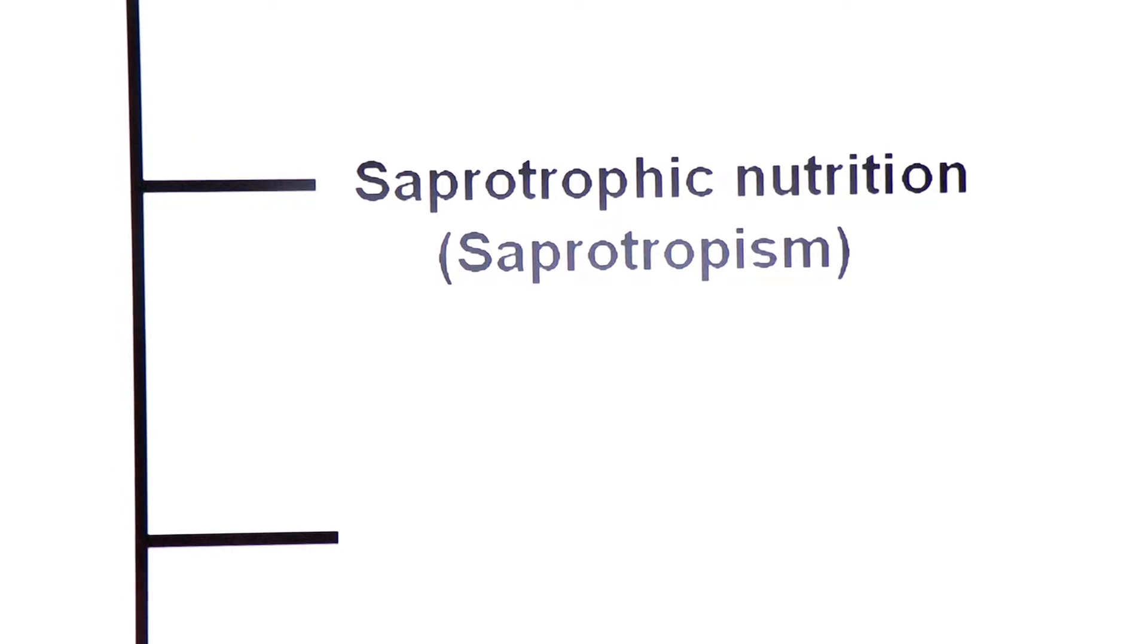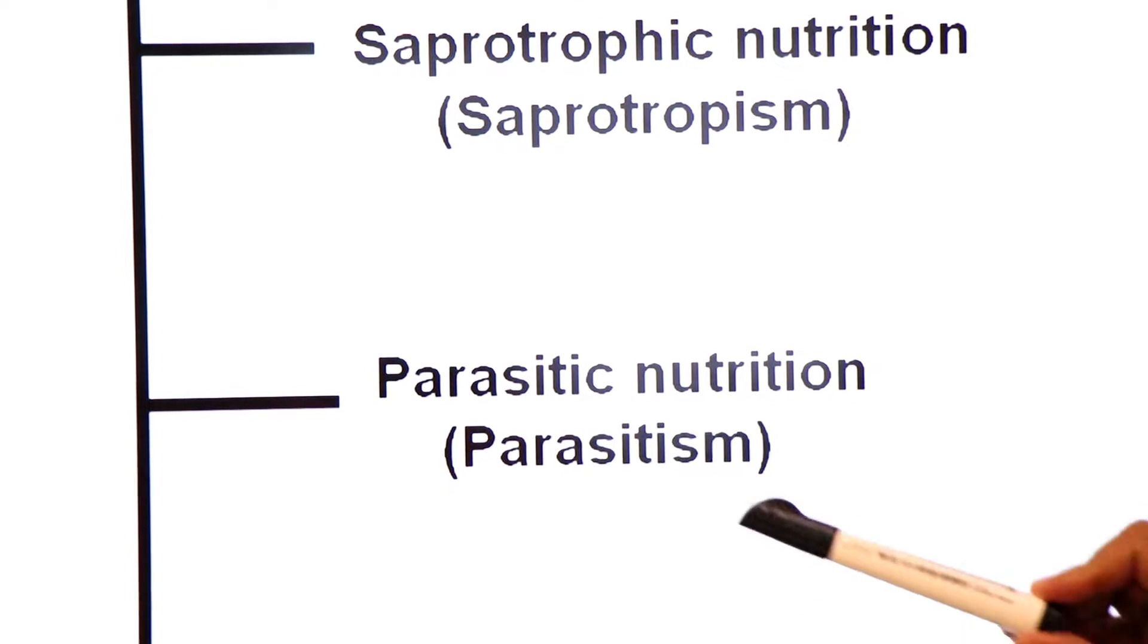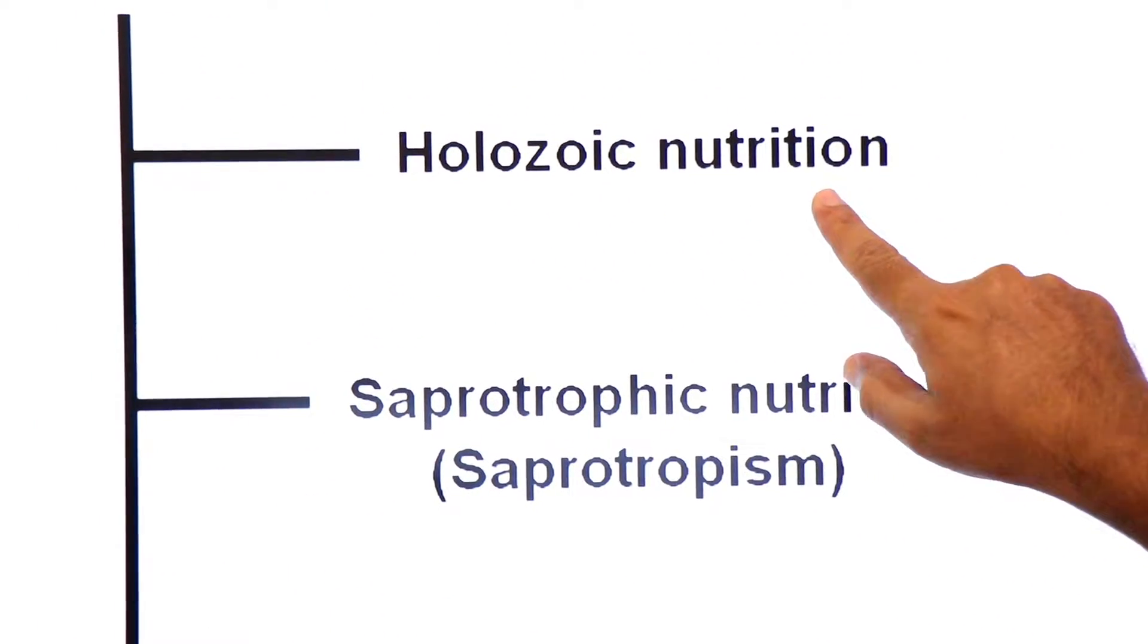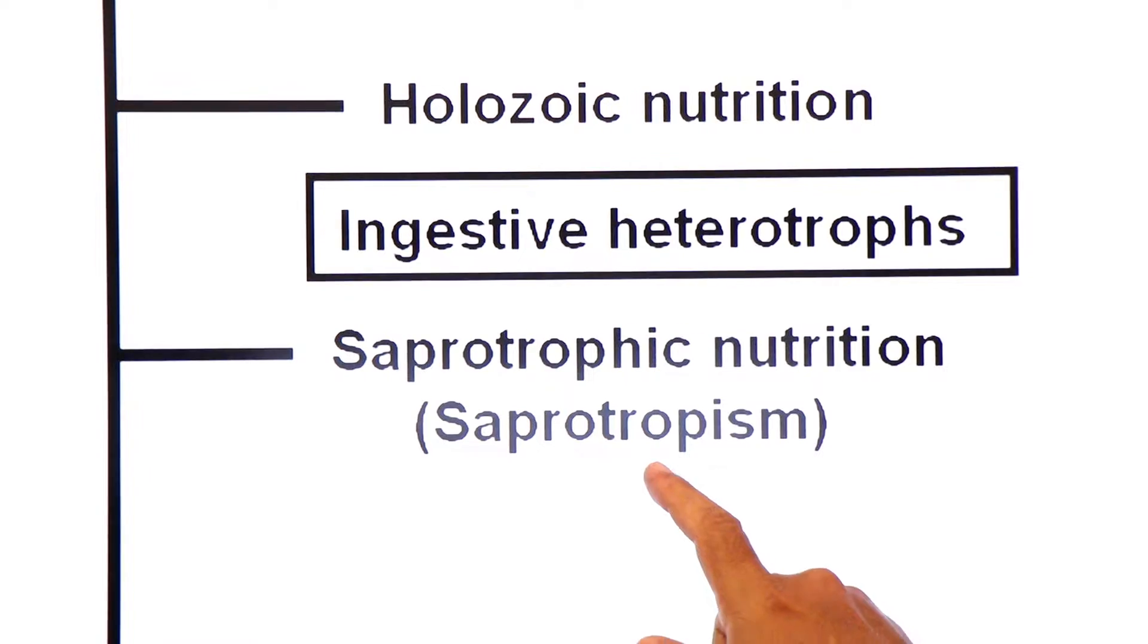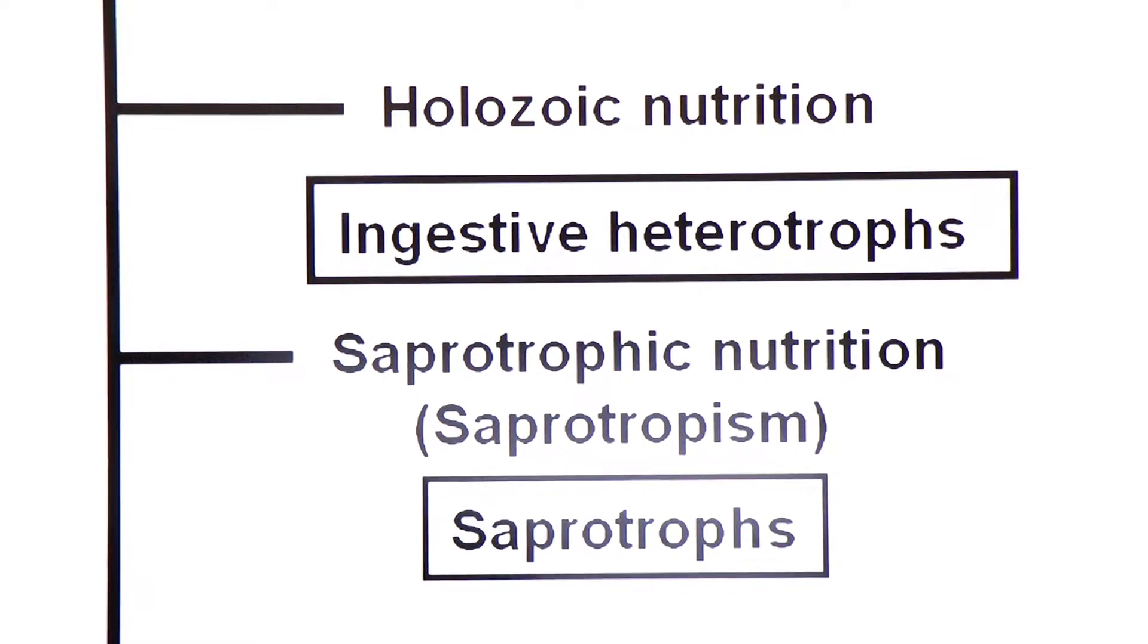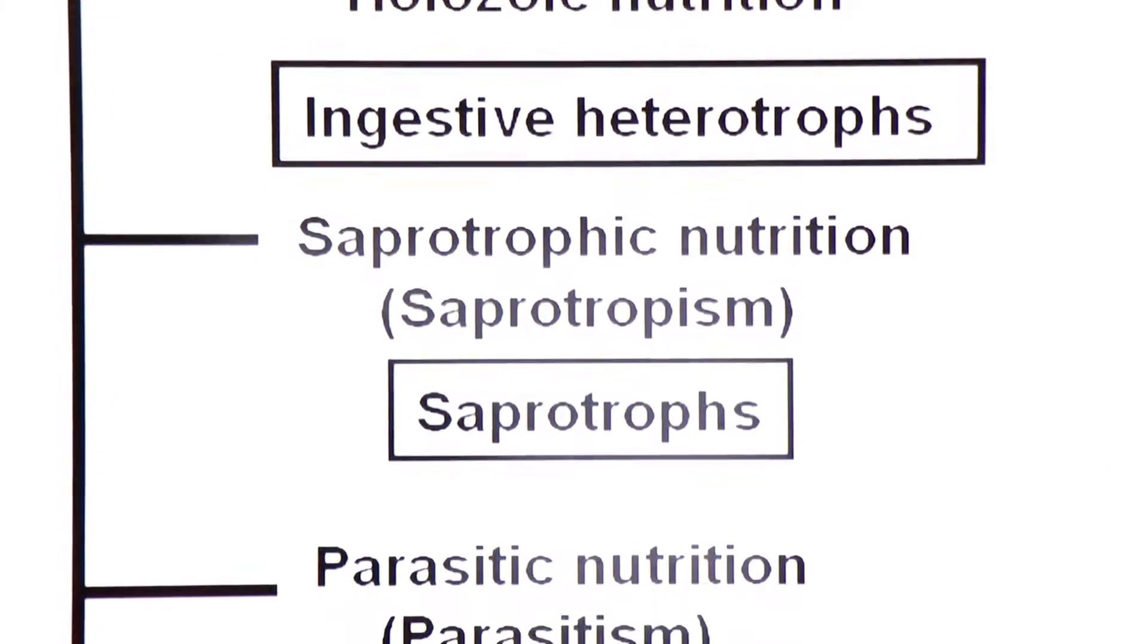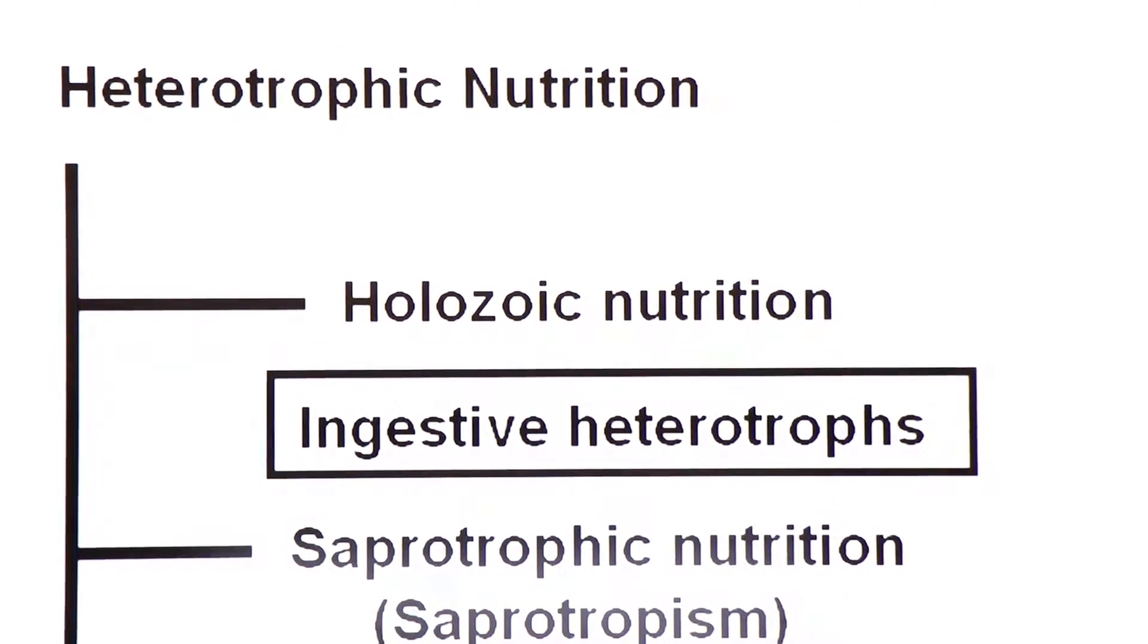And when the living organisms take their food from living tissues, such a type of nutrition is called parasitic nutrition, also called parasitism. Animals performing holozoic nutrition are called ingestive heterotrophs, organisms performing saprotrophic nutrition are called saprotrophs, and organisms performing parasitic nutrition are called parasites.